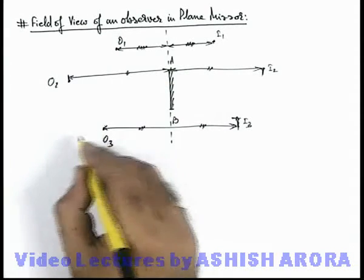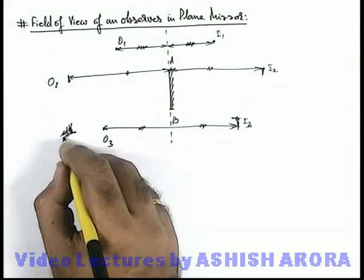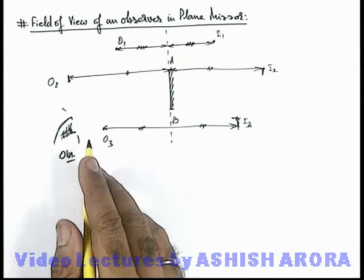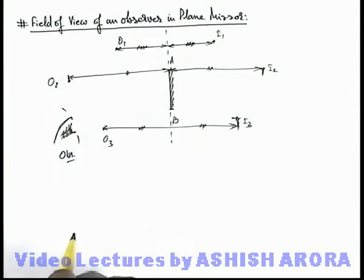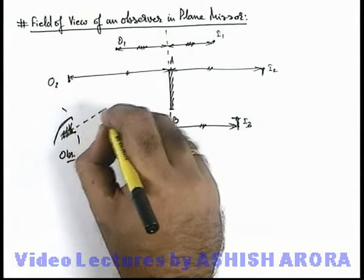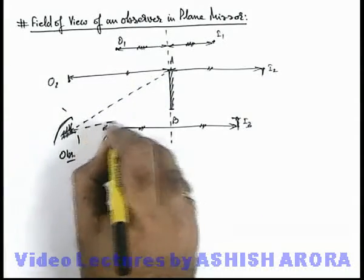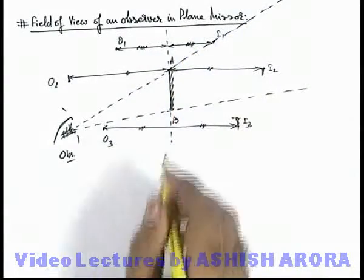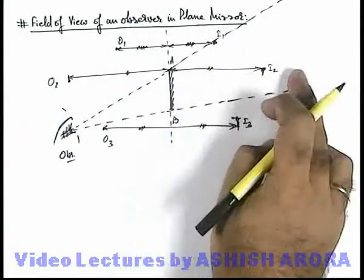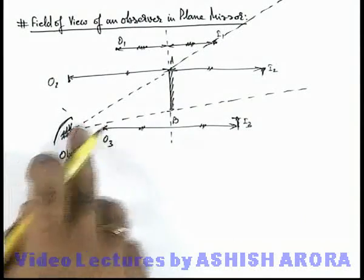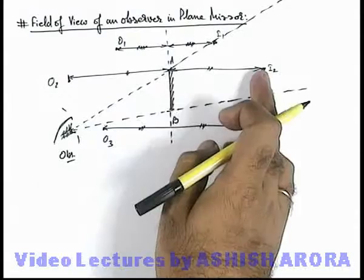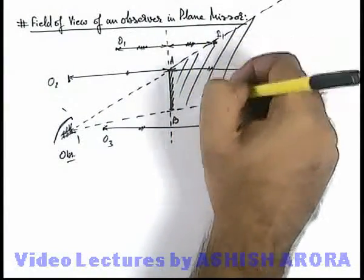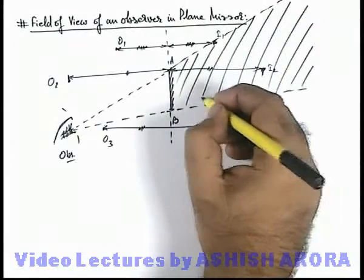Now in this situation, say at this location we have an observer located who is looking into the mirror. We wish to find whether this observer will be able to see all images or not. For this, we can join the observer's eye with the edges of the mirror and extend these lines behind the mirror. The shaded region bounded by these extended lines represents the observer's field of view.